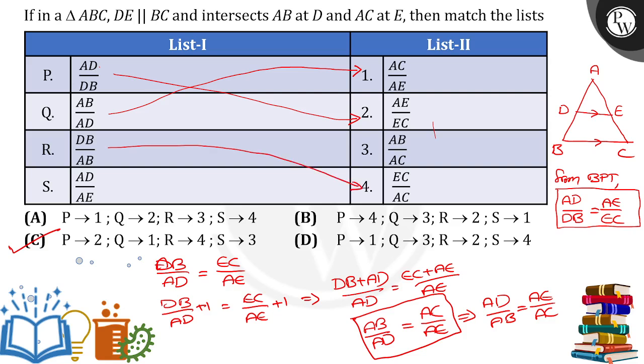And DB by AB is equal to option 4, EC by AC. And AD by AE, if I take AD by AE, it will be equal to AB by AC. So, I hope you understood. Option C is the right answer. Thank you.